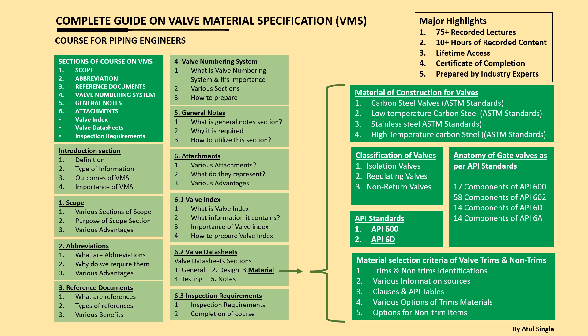We'll look at how we start working on valve trims, then cover various clauses and API tables especially with respect to API 600 — to understand how these standards help standardize the overall system. We'll go through all the clauses and tables specially related to each and every component of the valve, so that once we know all these clauses we will be able to fill that information in the material section of the data sheet.